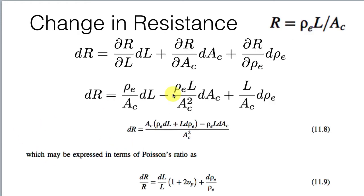How big is that change in resistance? There's a change in resistance due to the change in length — we have some derivative dR/dL for the change in length. We also have a change in resistance due to the change in cross-sectional area. And there's a change in resistance due to the change in resistivity. Those are the three factors expressed mathematically.